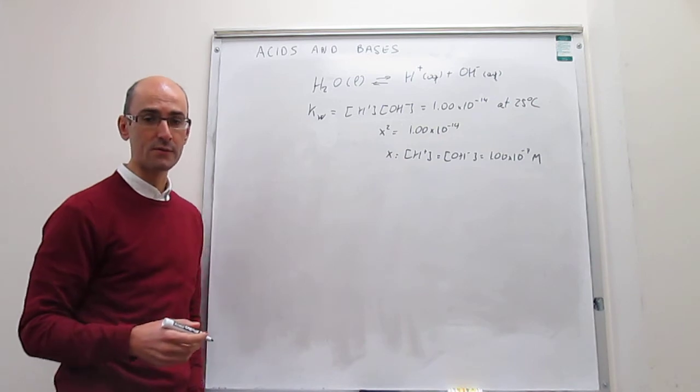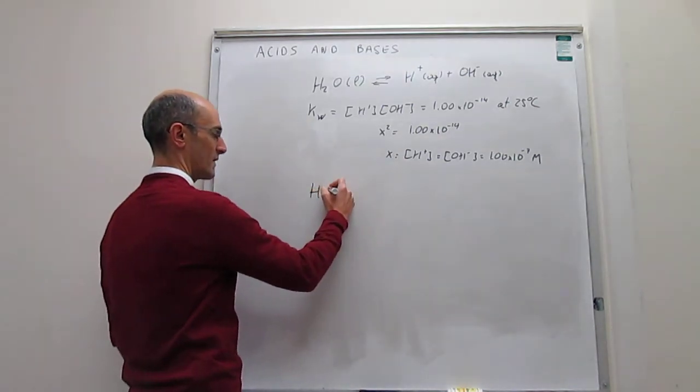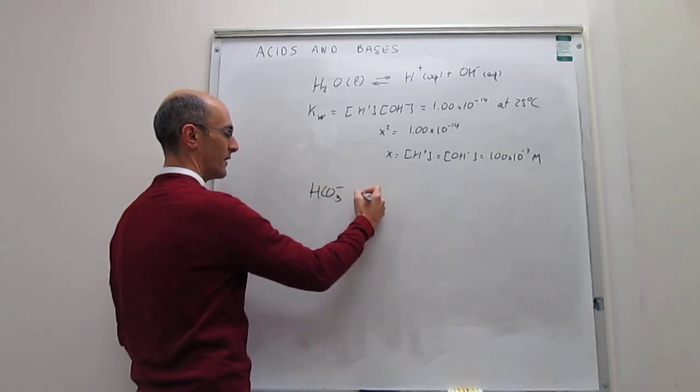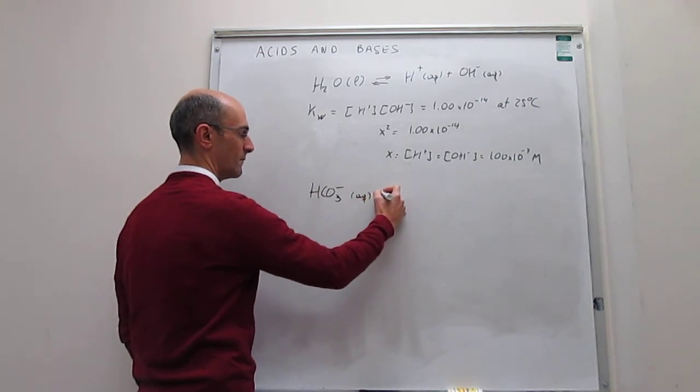And there are some other types of amphoteric substances that we're going to see. Another example would be the ion hydrogen carbonate or bicarbonate. So this ion can also act as an acid and a base.